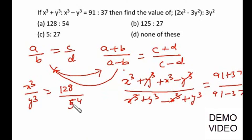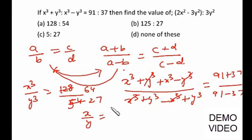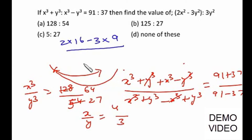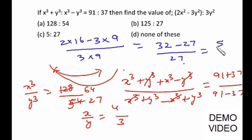So X³/Y³ = 128/54. Wait — it is 128/64. That means X³/Y³ = 64/27 — sorry, 91 − 37 = 54 but let me correct: 128/64. So X/Y = cube root of (64/27), which is 4/3. Now substituting X = 4 and Y = 3 into the given expression: 2×16 − 3×9 over 3×9, that is 32 − 27 over 27 = 5/27. That is the correct answer.